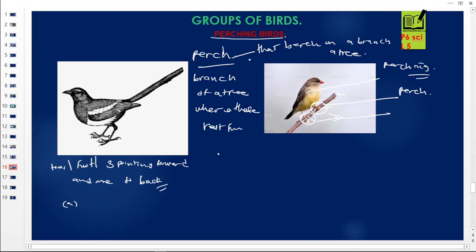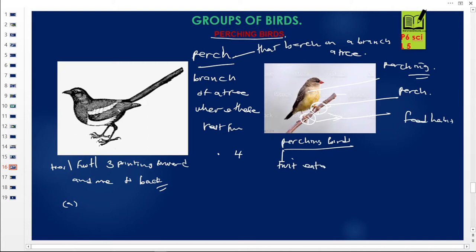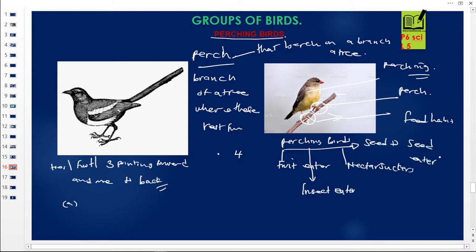Perching birds are classified into four groups according to their feeding habits. We have those that feed on fruits — fruit-eating birds. Those that feed on insects — insect eaters. Those that feed on nectar — we call them nectar suckers. And those that feed on seeds — seed eaters. So the four groups are: fruit eaters, insect eaters, nectar suckers, and seed eaters.